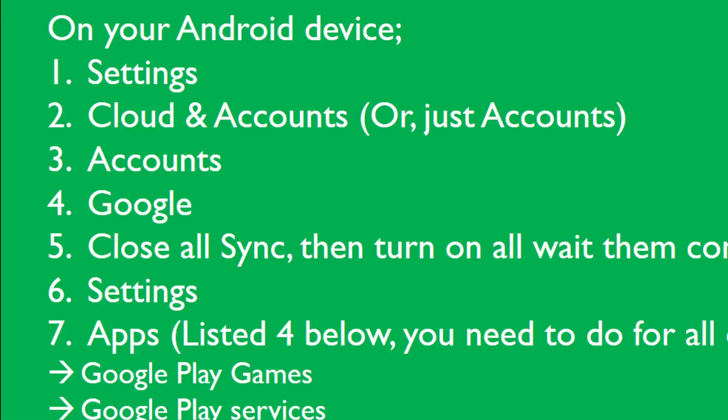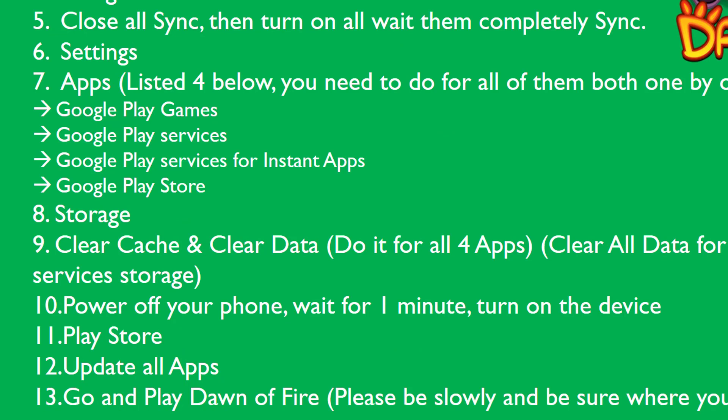On your Android device, go to Settings, then click on Cloud and Accounts — you may see it as just Accounts. Then choose Accounts, choose Google, close all sync, then turn them all on and wait for them to completely synchronize.